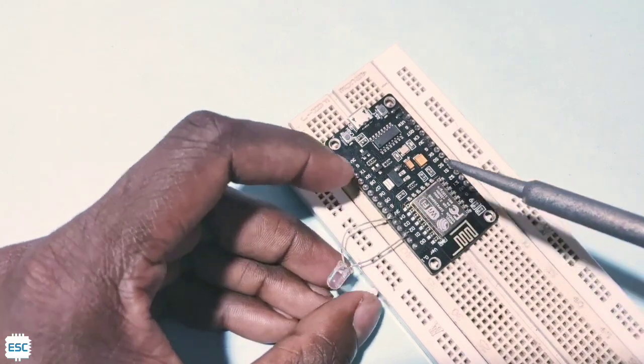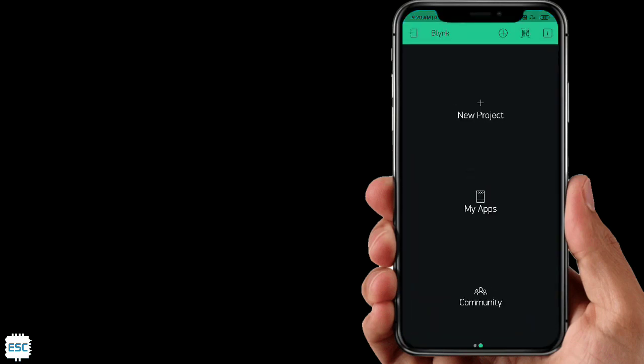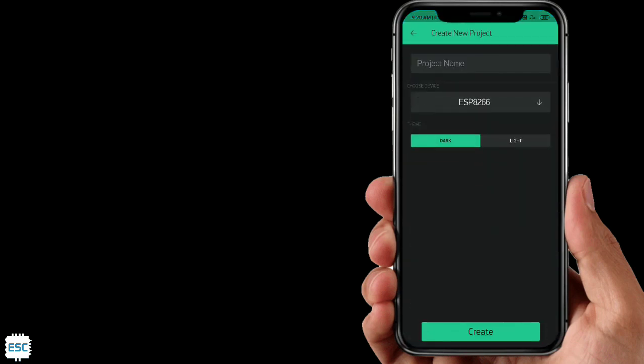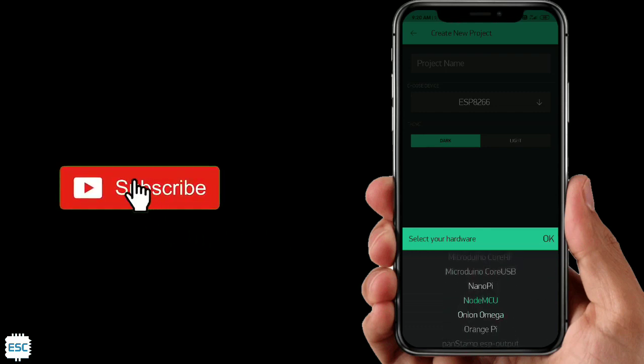Now let's set up our Android app. Open Blynk app and click on new project, select NodeMCU as board and WiFi as communication. Please watch my previous video to know more about Blynk app and how to set it up.